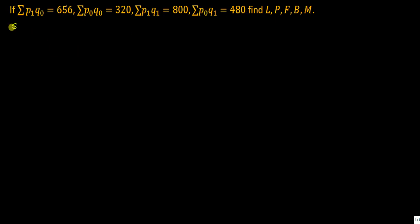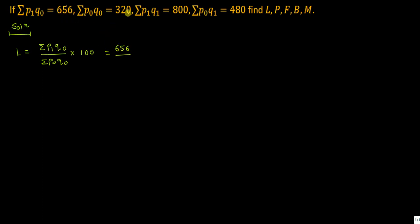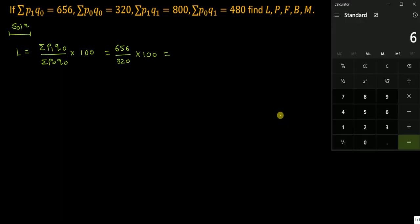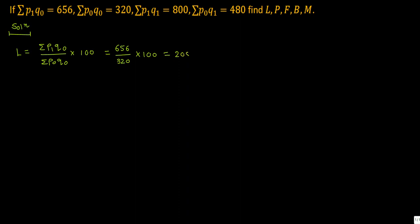First we have to find Laspeyres and Paasche's index number. Laspeyres' index number is equal to sigma P1Q0 divided by sigma P0Q0 into 100. It is equal to 656 divided by 320 multiplied by 100. It is equal to 205.